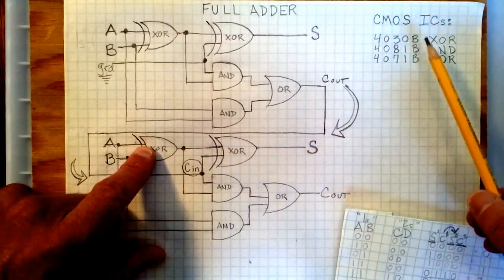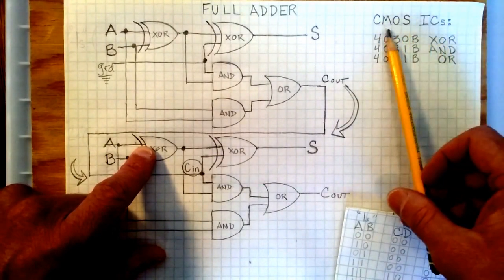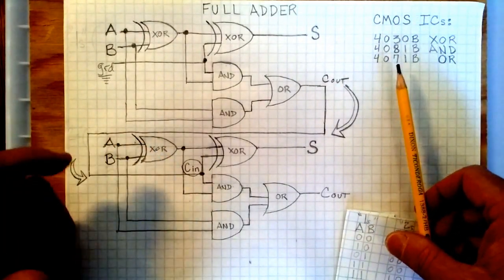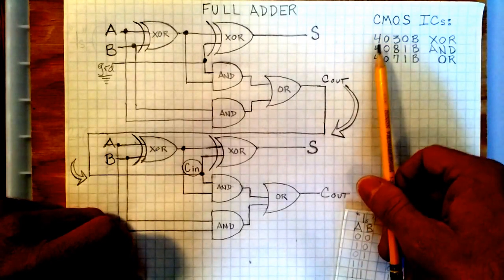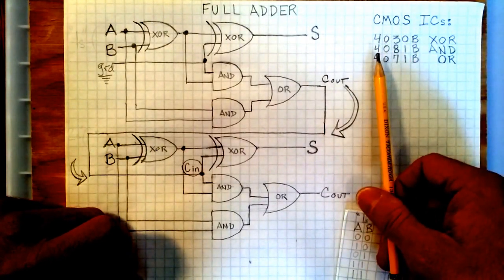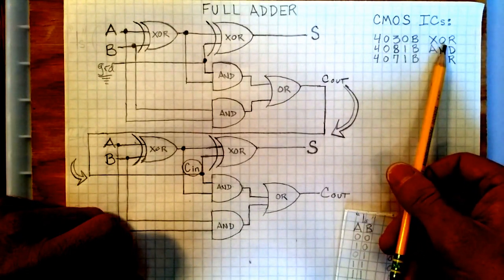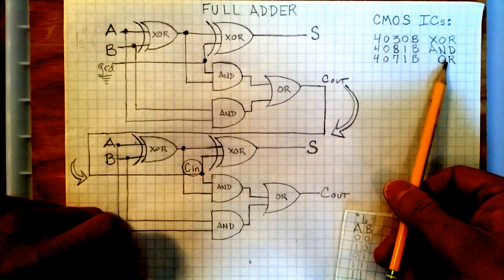Now, I'm using all CMOS ICs, that's complimentary metal oxide chips. You want to keep that all in the same family. I'm using the 4000 series, or you can use TTL transistor chips as well. The CMOS have better energy performance. Got a 4030B exclusive OR, 4081B AND, and a 4071B OR.